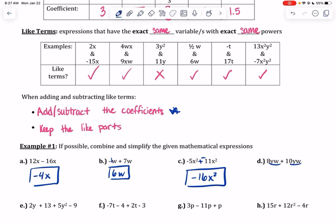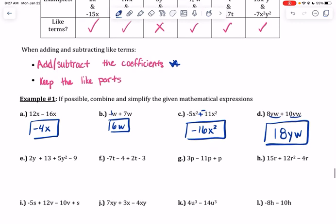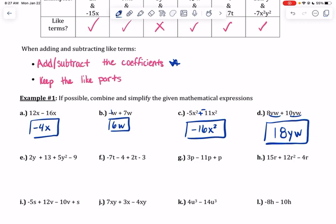yw, yw, can add them right together, so 8 plus 10. Letter e, you've got 2y plus 13 plus 5y squared minus 9. Okay, so regular numbers you can combine those, so 13 minus 9 makes positive 4.